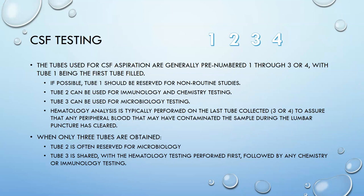The tubes used for spinal fluid aspiration are generally pre-numbered one through three or one through four, with tube one being the first filled. If possible, tube one should be reserved for non-routine studies or things that might need to be sent to a reference lab. Tube two can be used for immunology and chemistry testing. Tube three can be used for microbiology testing. Hematology analysis is typically performed on the last tube collected — three or four — to assure there is no contamination from peripheral blood from the lumbar puncture. If only three tubes are obtained, as in a hard-to-collect or pediatric sample, tube two is often reserved for microbiology and tube three is shared, with hematology testing first followed by chemistry or immunology testing with what remains.